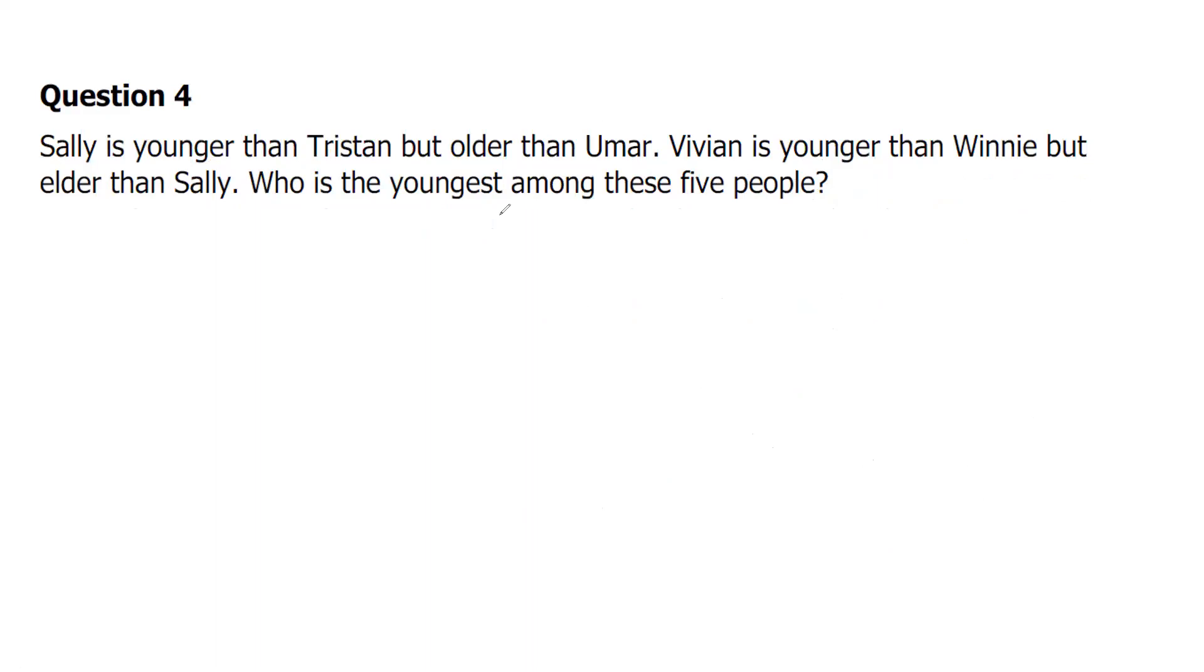Sally is younger than Tristan but older than Umar. So we'll go on comparing like a number line. Sally is younger than Tristan, so Tristan is elder. Tristan is elder than Sally but older than... it's coming like that. Vivian is younger than Winnie, so Winnie is again elder.